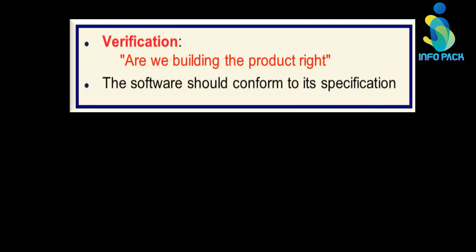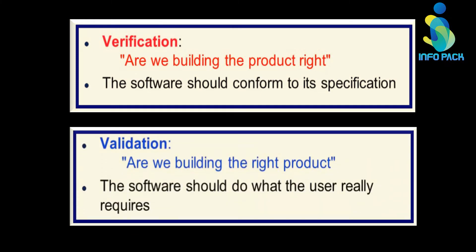So verification is: are we building the product right? The software should conform to its specification. Validation is: are we building the right product? The software should do what the user really requires — that the software is delivering results according to the user's expectations, and the right software has been given to the user.